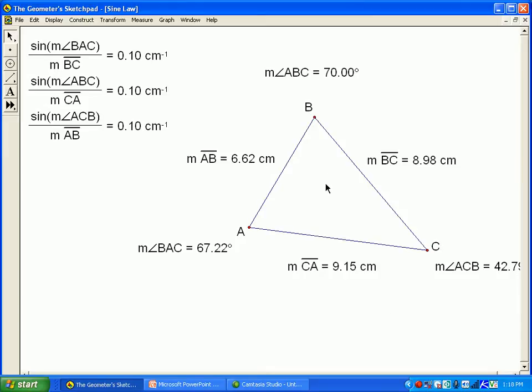In this geometry sketchpad diagram, I've measured all the sides and angles. For example, 6.62 is the length of the AB side, 8.98 is the BC side. I've also measured the angles, so when it says angle ABC, we go ABC, so that's angle B.